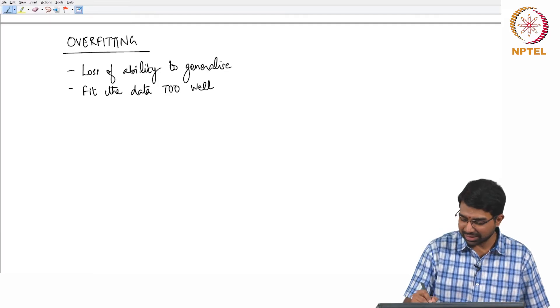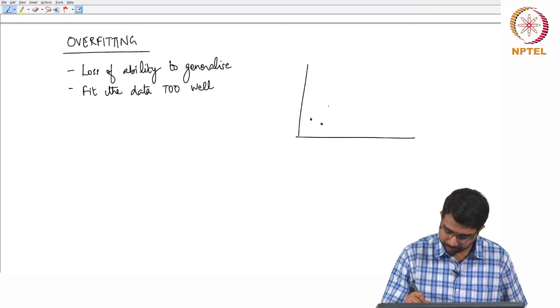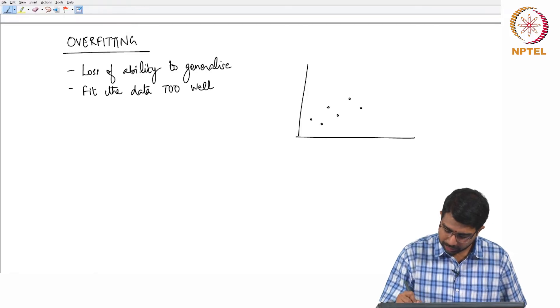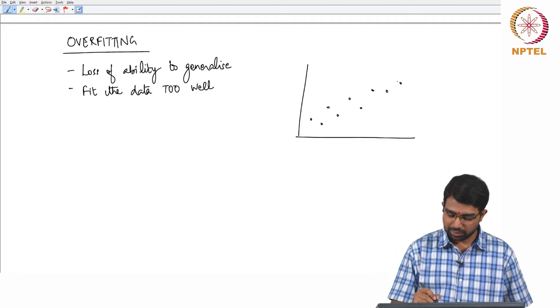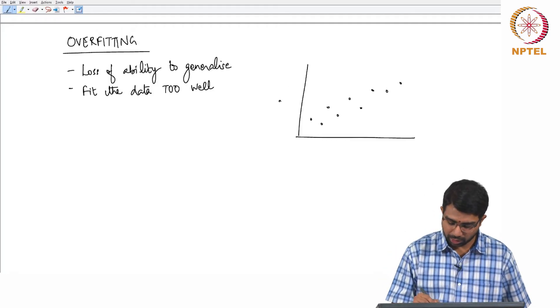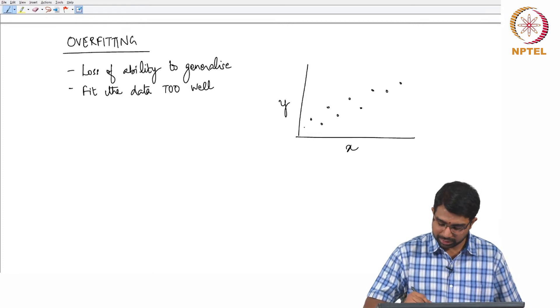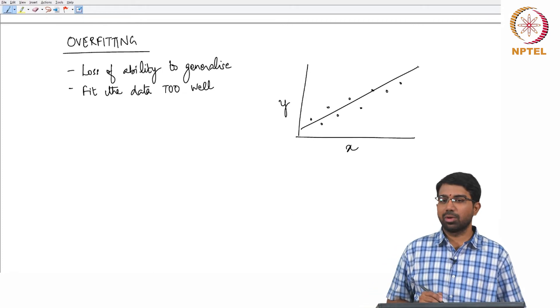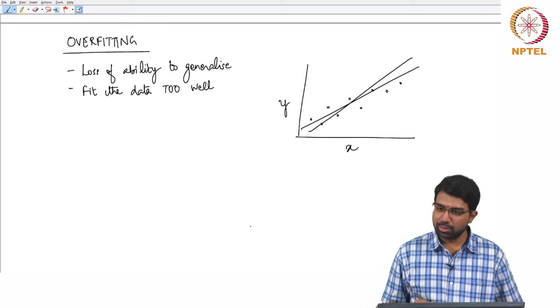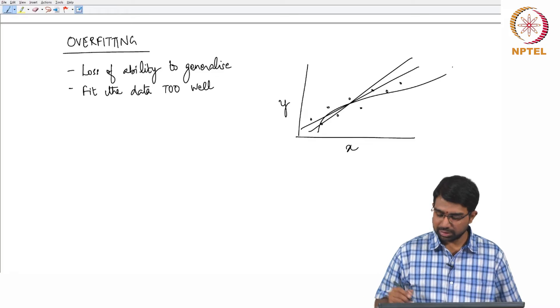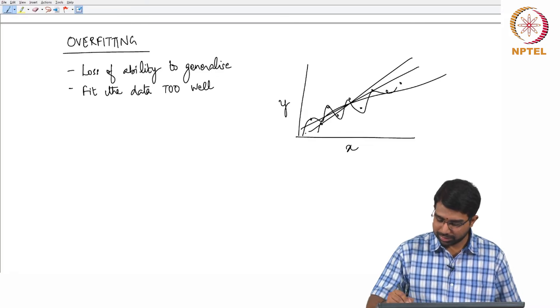So a classic example you may have all seen for overfitting is in case of regression. You have a simple system like this and you want to build some sort of correlation. There is y and there is x. So you may think that this is a good correlative model to explain y versus x. Maybe this is another good model but this could also be a model but a really weird model would be this.